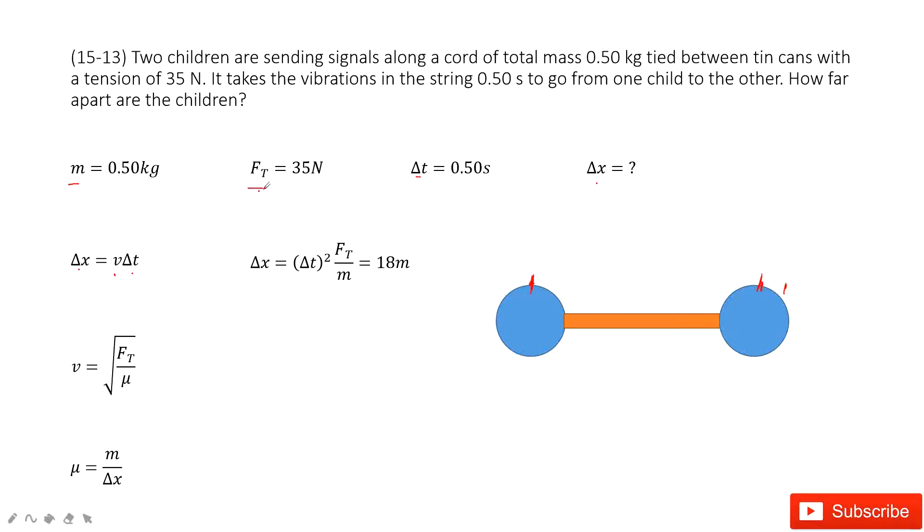It gives us the tension for the chord. So we use this equation. The speed for the wave is square root of FT divided by mu. FT is given.